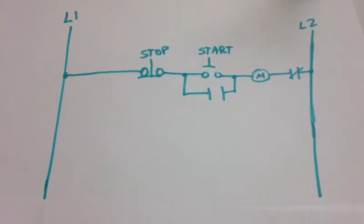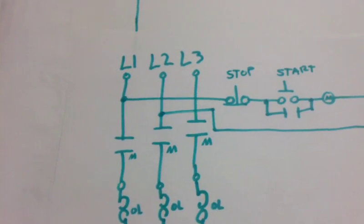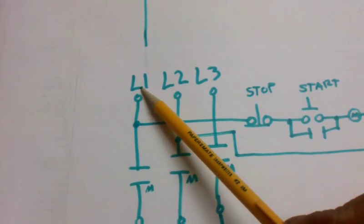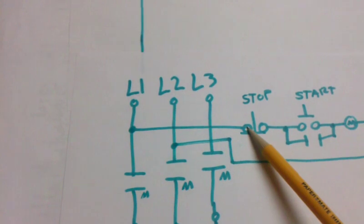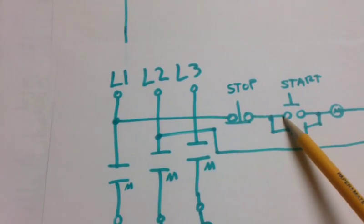We have a common control. As you can see, line one goes straight to our stop button, which is normally closed. Then from there we go to our start button, which is normally open.